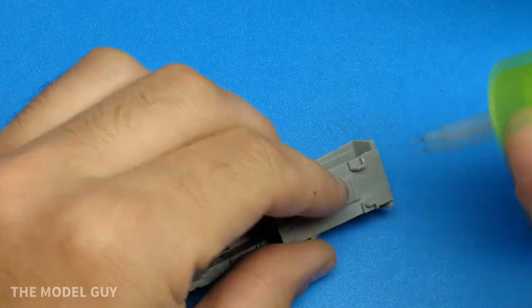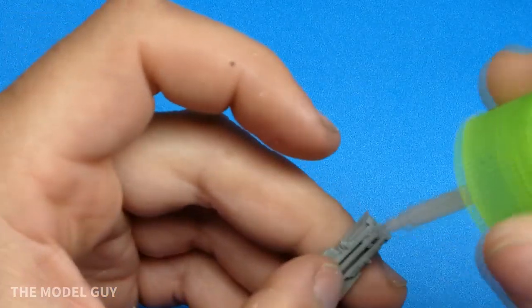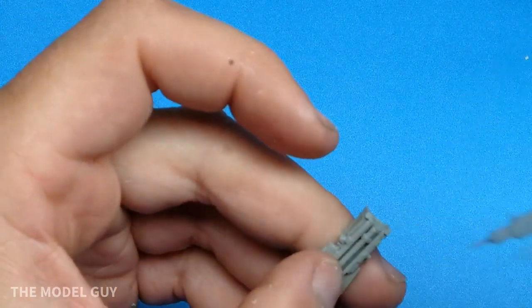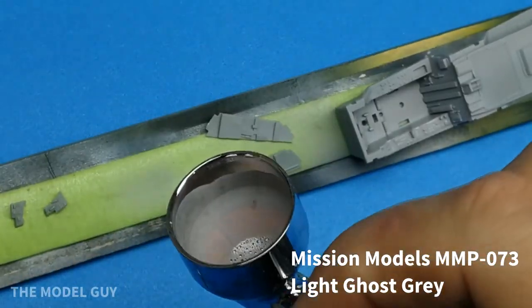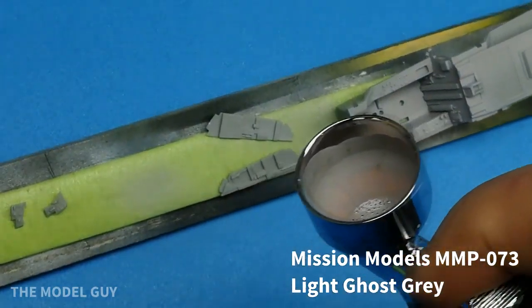Hello viewers and welcome back to another video from The Model Guy. In this episode we'll be tackling the Kinetic CF-18B Hornet. However, there were some issues with the kit and we'll get into those later, but first we'll start off with the brief history of the Canadian Hornet.